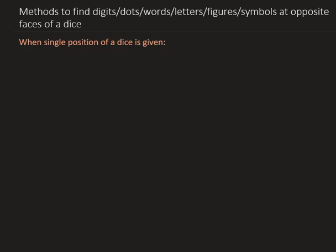Hello. Today's topic is methods to find digits, dots, words, letters, figures, or symbols at opposite faces of dice. Basically, we are going to discuss about when a single position of a dice is given.